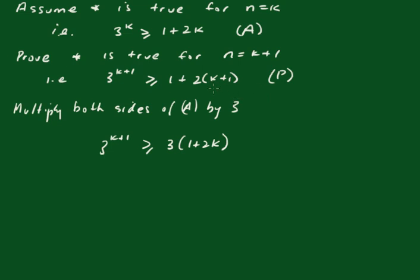Now for this P to be true, this here will have to be greater than this one here. So if this one is greater than that one, therefore this will be true, because this is the true statement.